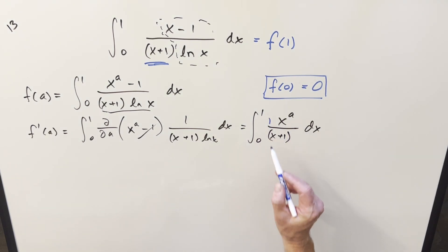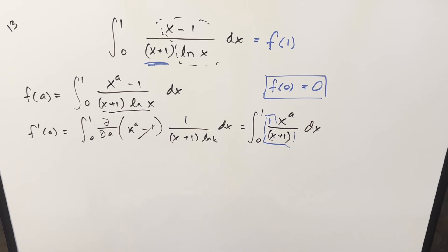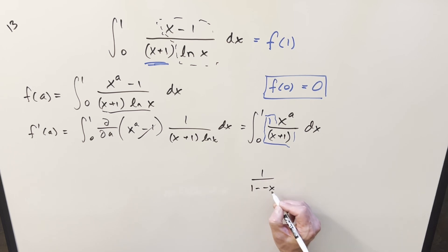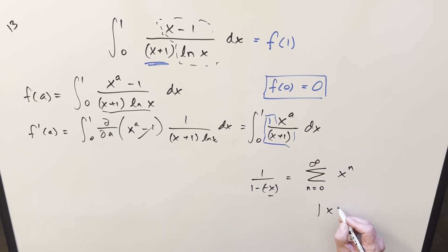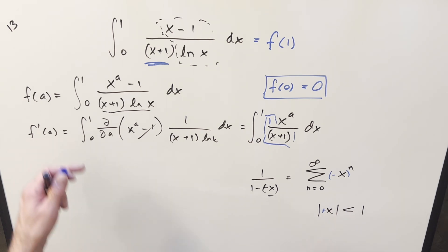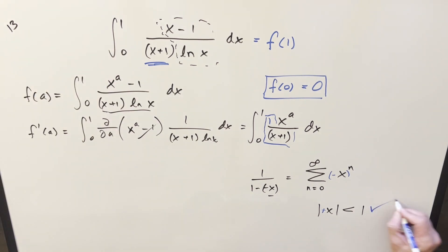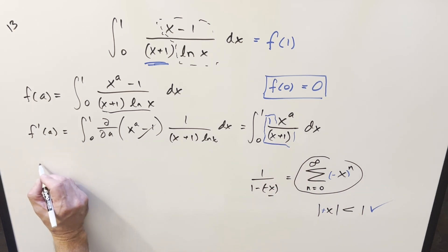Now I want to do a geometric series expansion on the 1 over (x plus 1) part. We write x plus 1 as 1 minus (minus x), which allows us to use the geometric series formula: the sum from n equals 0 to infinity of (minus x) to the n, valid when the absolute value of x is less than 1. Our bounds tell us x is always between 0 and 1, so we have convergence. We plug this in for 1 over (x plus 1), distribute x to the a inside, and split off the minus 1 factor separately. We rewrite x to the n times x to the a as x to the n plus a.